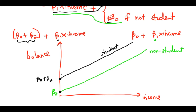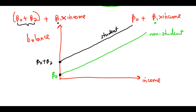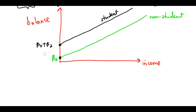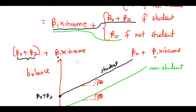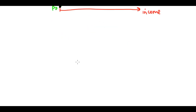The fact that the two lines are parallel means the average effect on balance of a one-unit increase in income doesn't depend on whether or not the individual is a student. Since the slope is the same, the change in balance is the same for students and non-students. This may not be true in real life, and this limitation motivates including an interaction term.